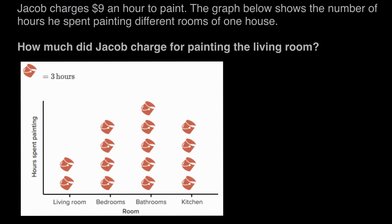Jacob charges $9 an hour to paint. The graph below shows the number of hours he spent painting different rooms of one house. How much did Jacob charge for painting the living room?